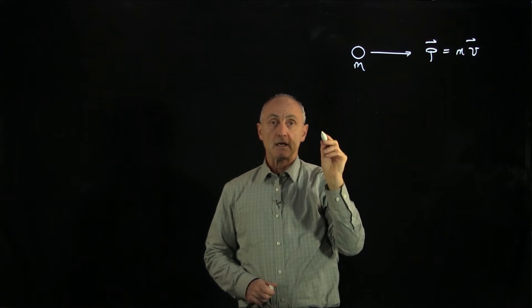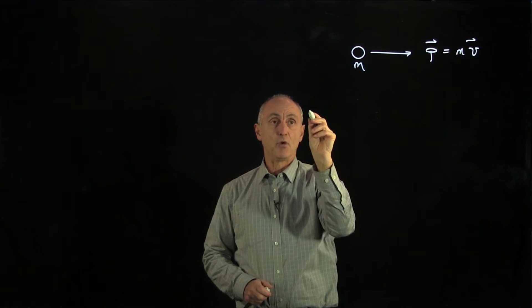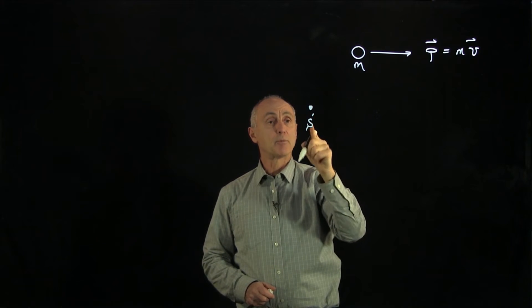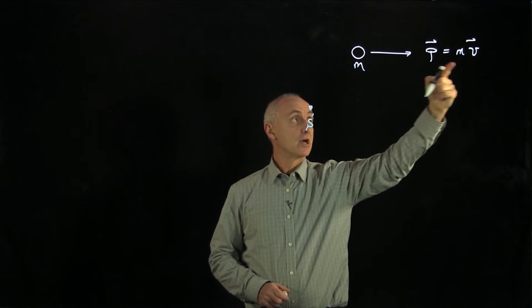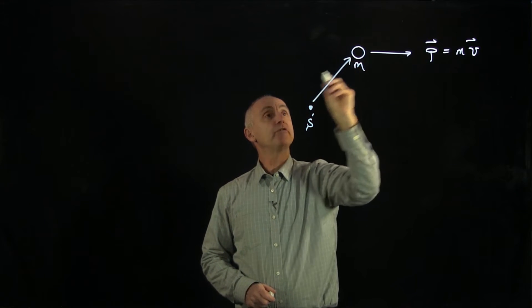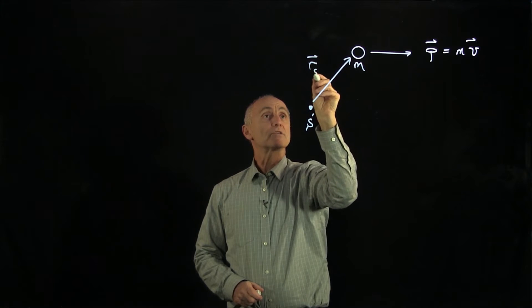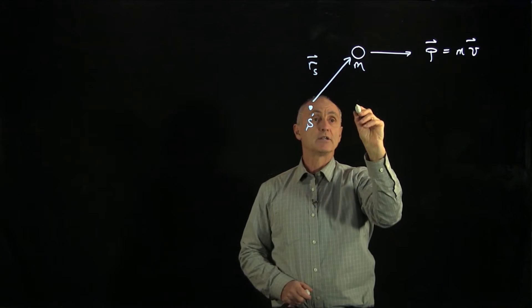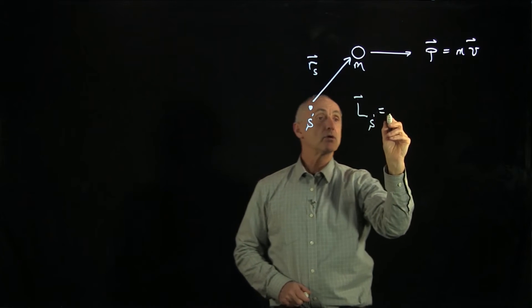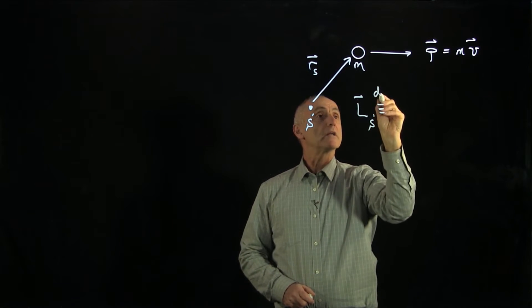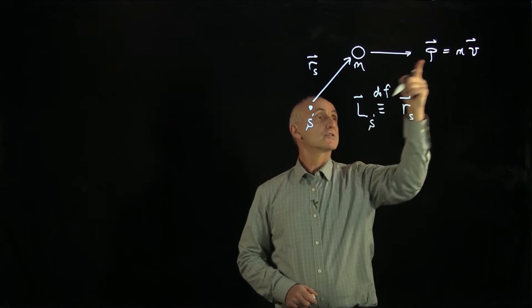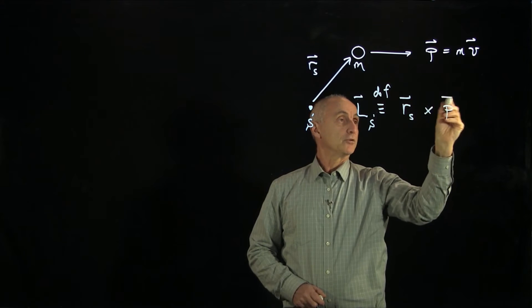Angular momentum is always defined about some point. So suppose we choose a point s, and I want to define the angular momentum about s due to this motion of the object. The way it's defined is I'll draw a vector from the point s to where the object is, and our definition of angular momentum about s is equal—this is three lines for our definition—it's the vector cross product of the vector rs with the vector p.